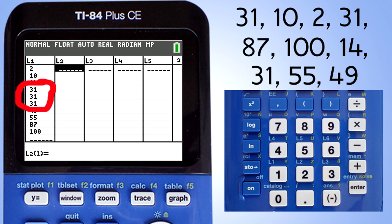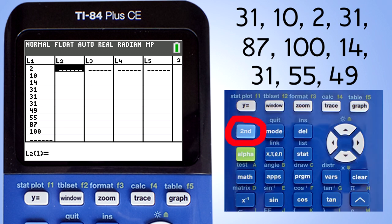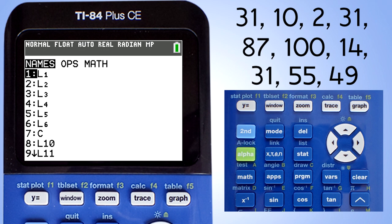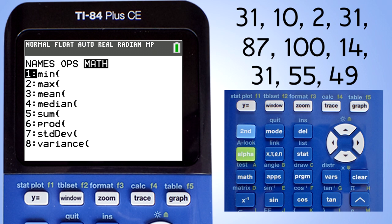Let's use a shortcut to find the mean and the median. Press the second button and the list button, which is this stat button. This window appears. Go to the math. Here's where we can find the mean and median.